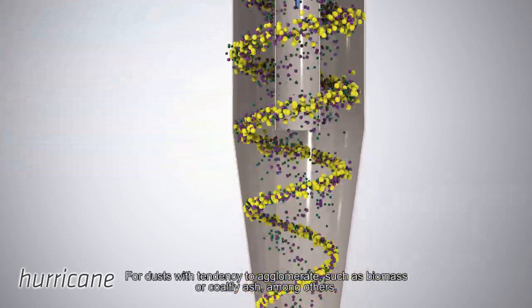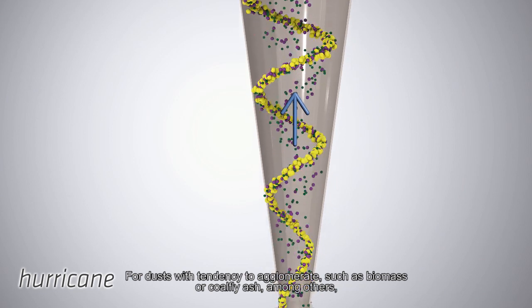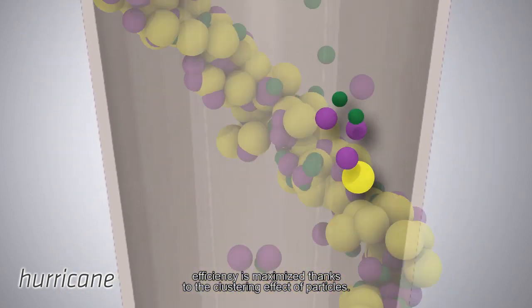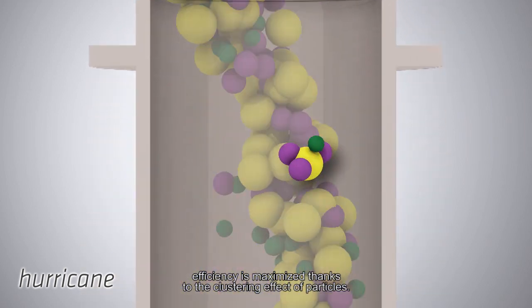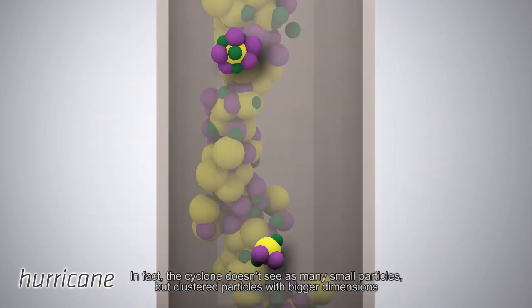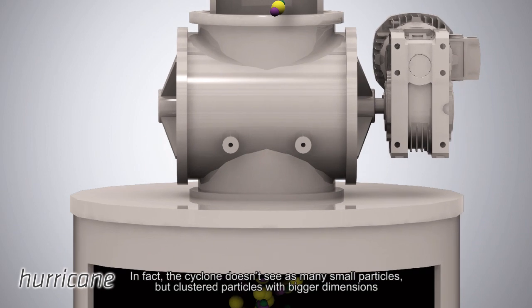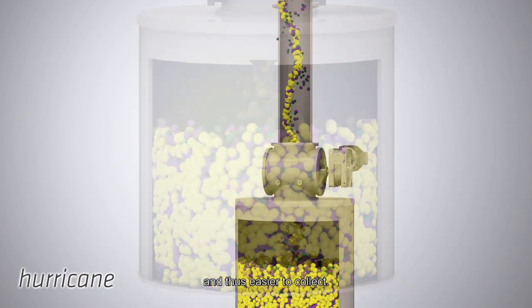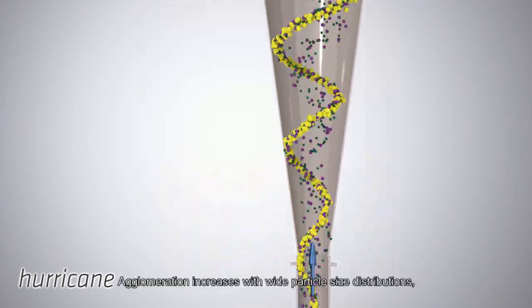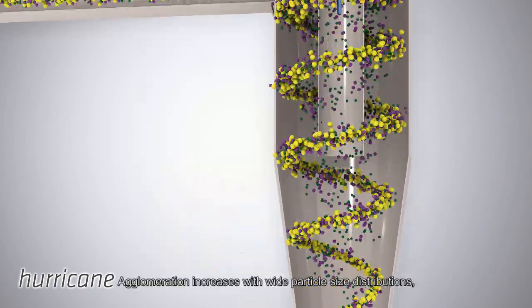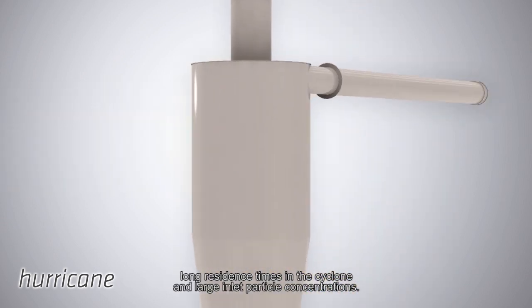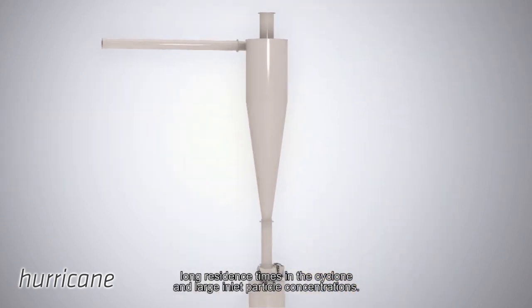For dusts with tendency to agglomerate, such as biomass or coal fly ash among others, efficiency is maximized thanks to the clustering effects of particles. In fact, the cyclone doesn't see as many small particles, but clustered particles with bigger dimensions and thus easier to collect. Agglomeration increases with wide particle size distributions, long residence times in the cyclone, and large inlet particle concentrations.